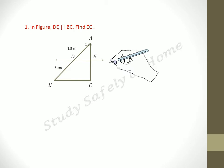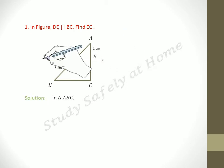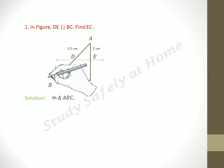They have given the data here, we have to find EC. Solution: in triangle ABC, DE parallel BC, it has been given. So, what happens here?